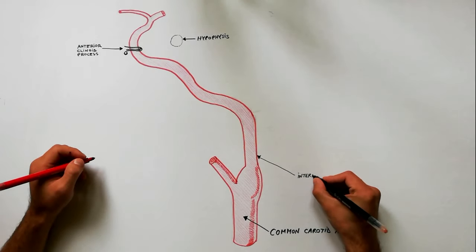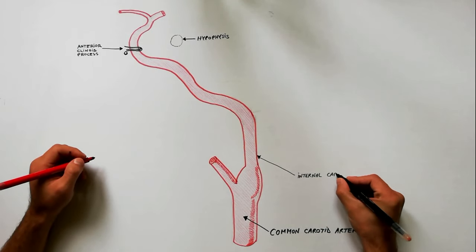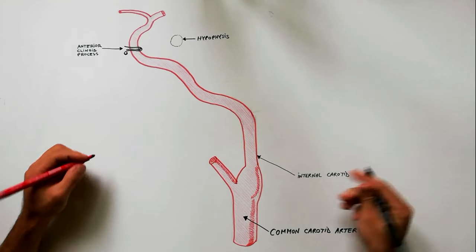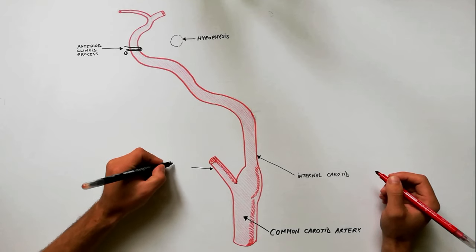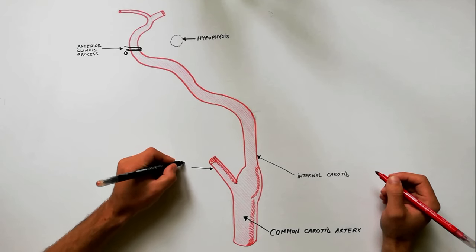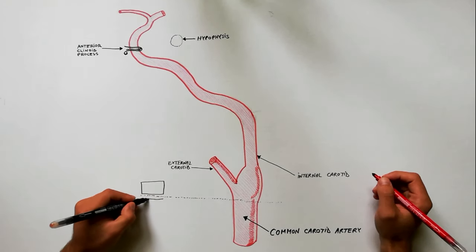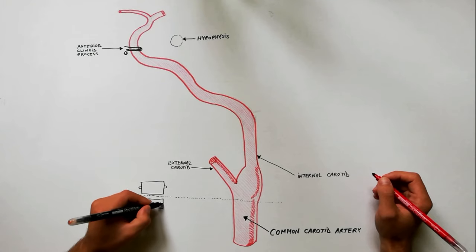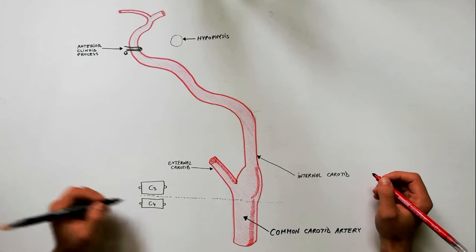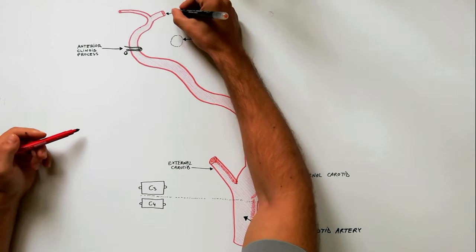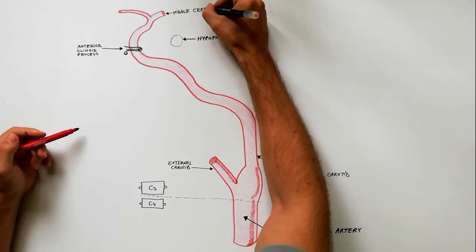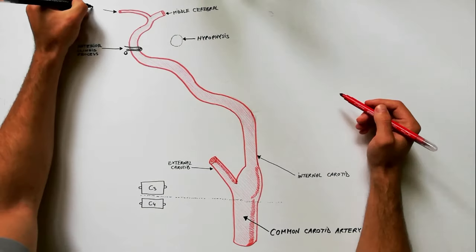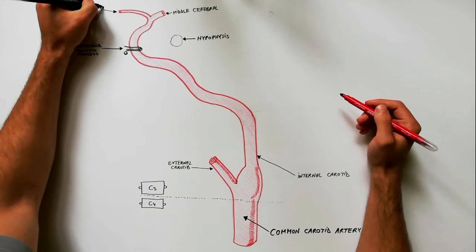The internal carotid artery arises from the common carotid artery where it bifurcates into the internal and external carotid arteries at cervical vertebral level 3 or 4. The internal carotid artery terminates in the skull by dividing into the middle cerebral and anterior cerebral arteries.